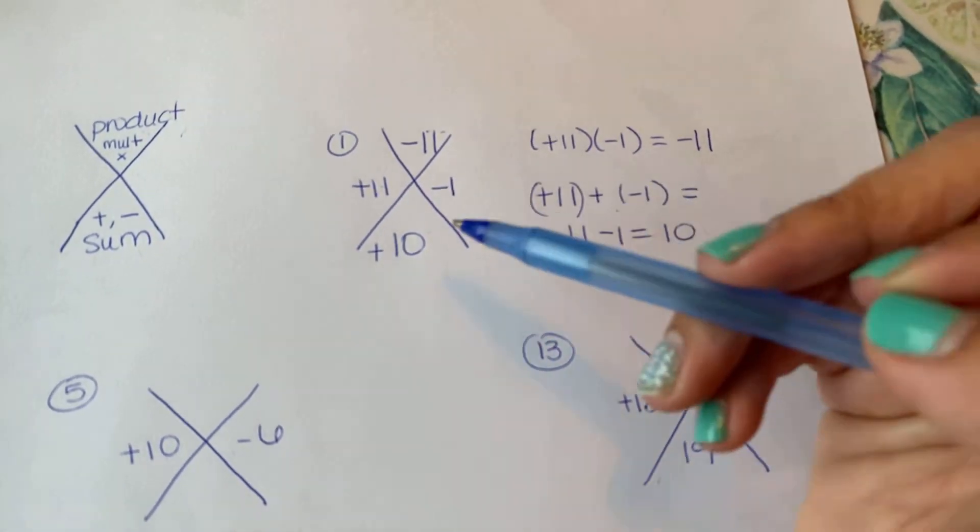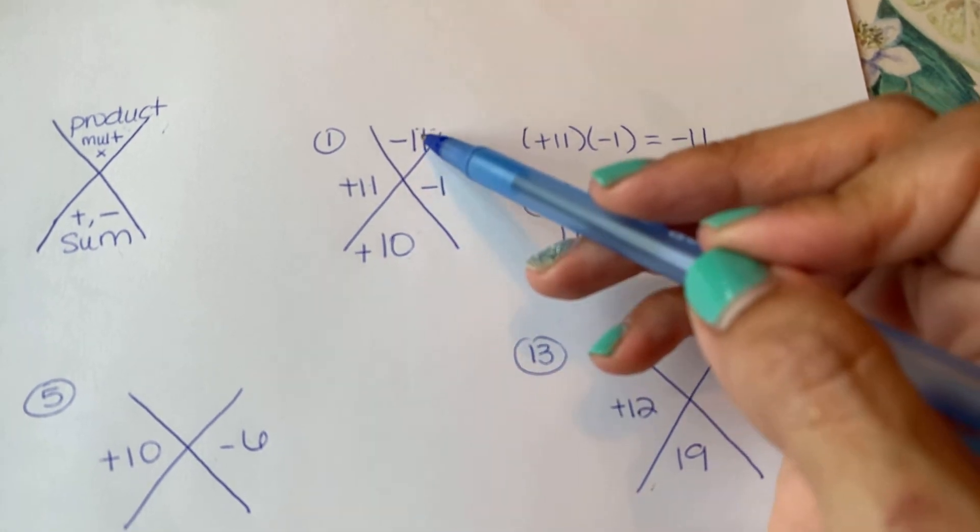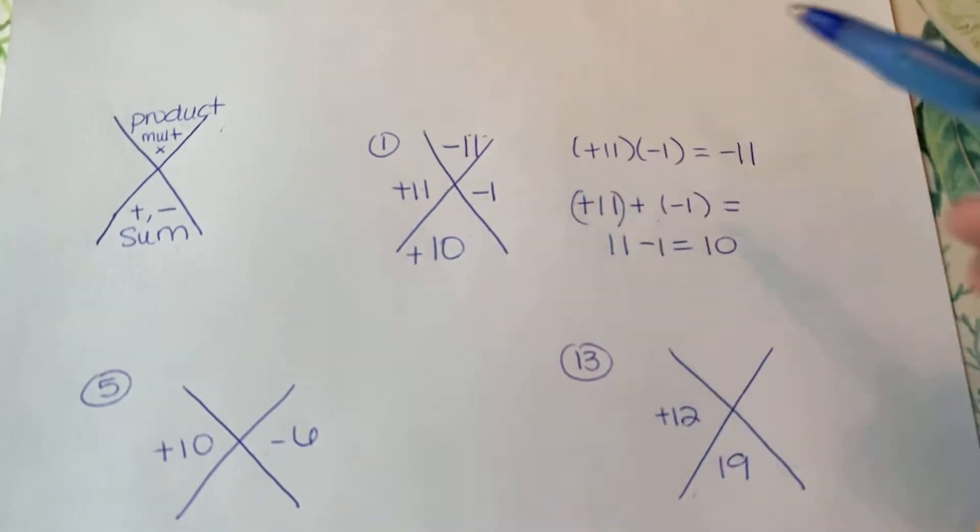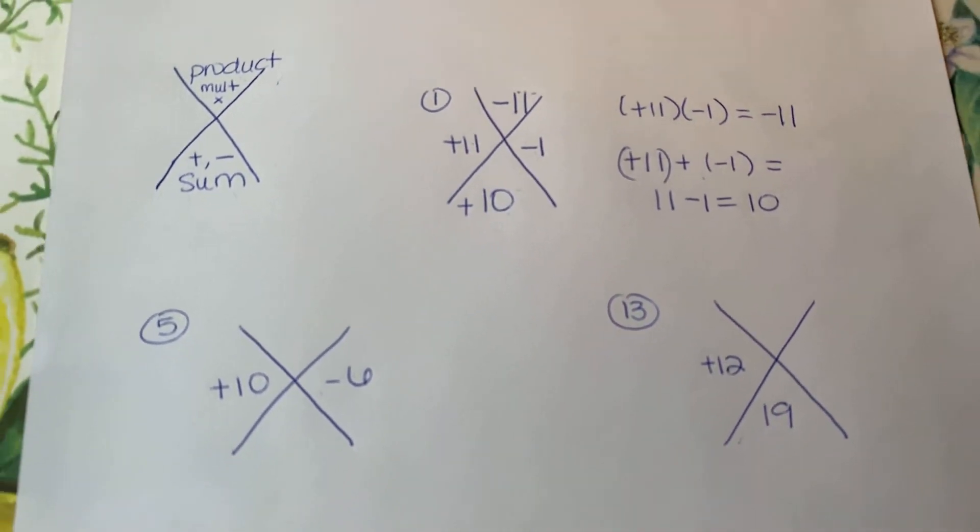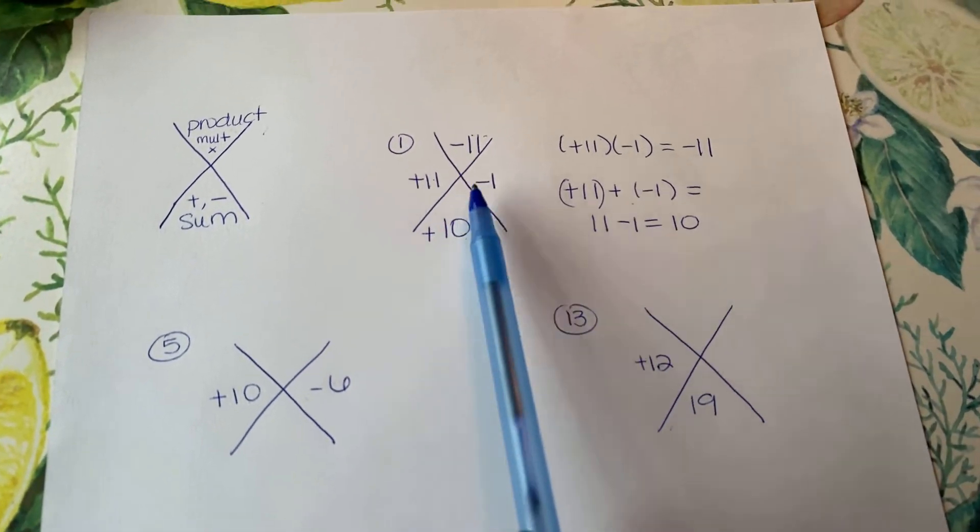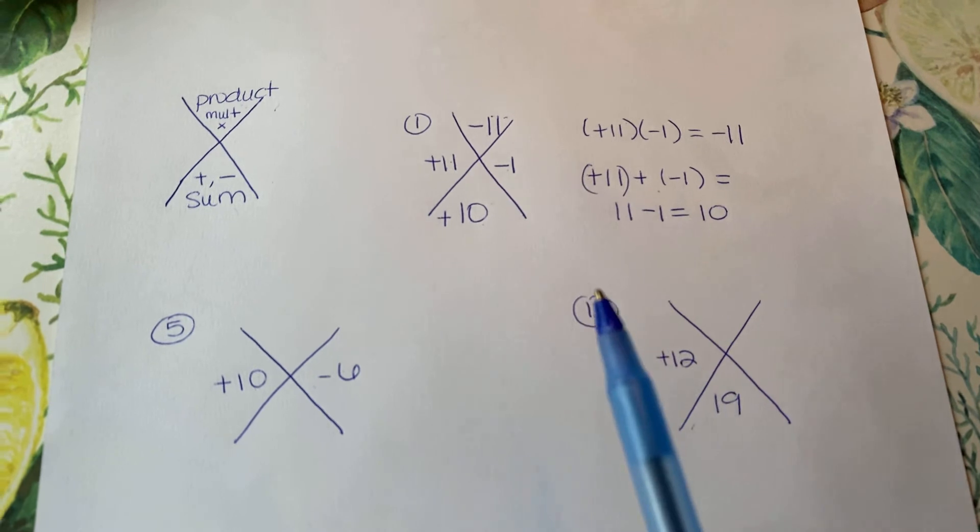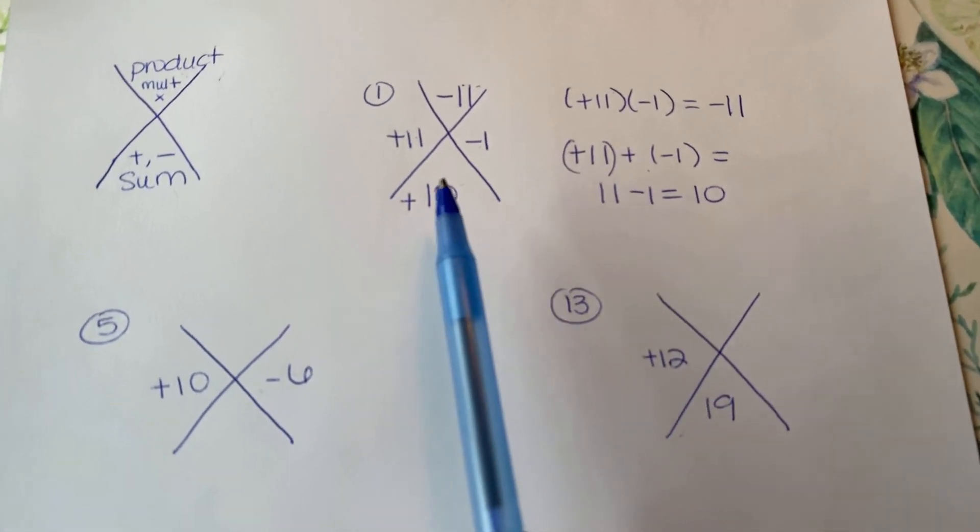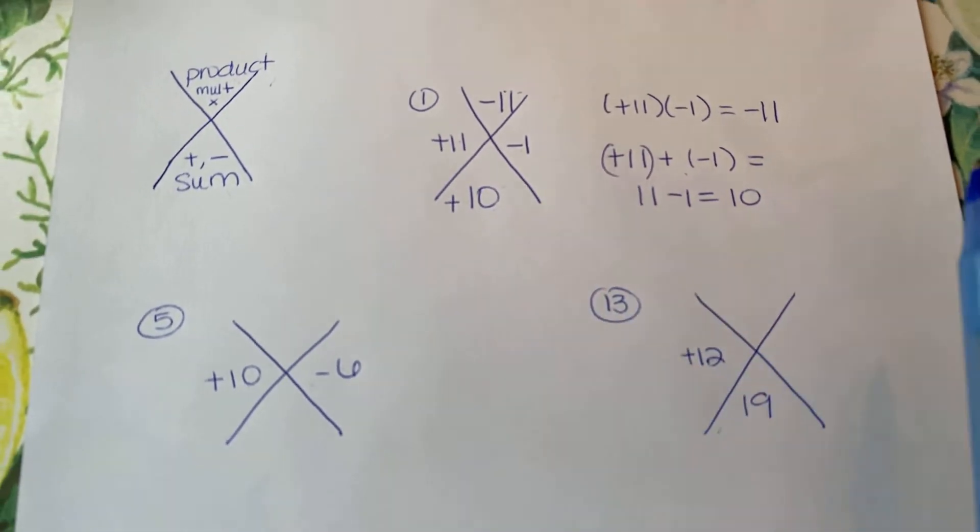You can just go what's 11 minus 1? 10. What's 11 times negative 1? Negative 11. Perfect, that's it. You filled it in and you'll see when we get into factoring, the actual factoring lecture, you'll see how this magic X done to the side is super helpful. It's a great graphic organizer.